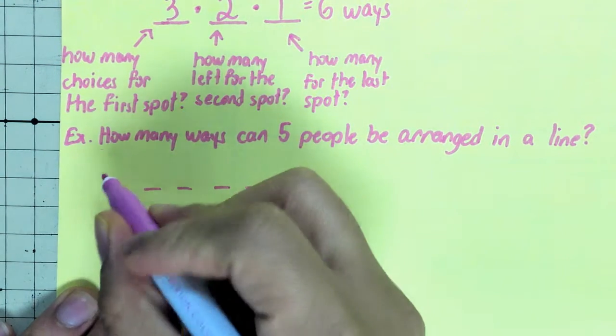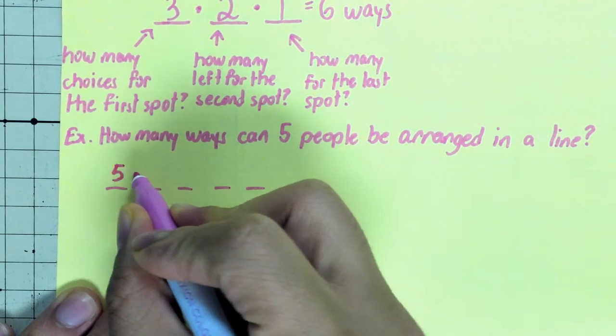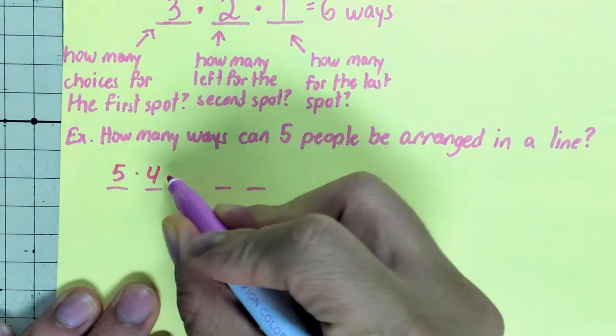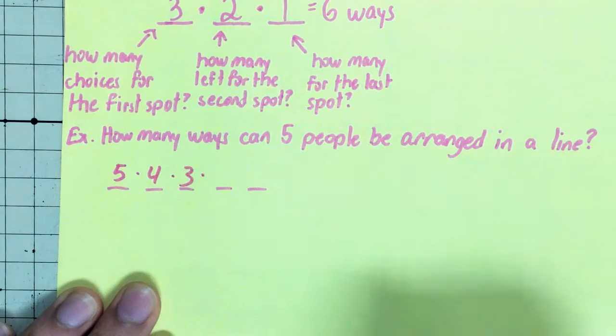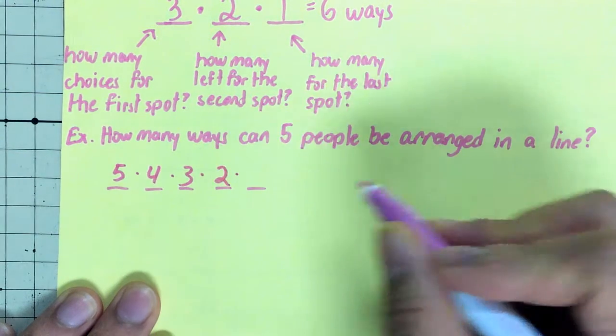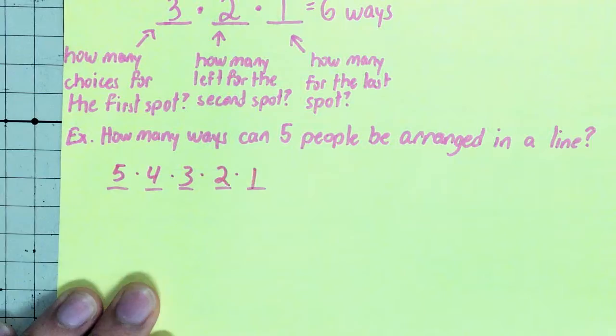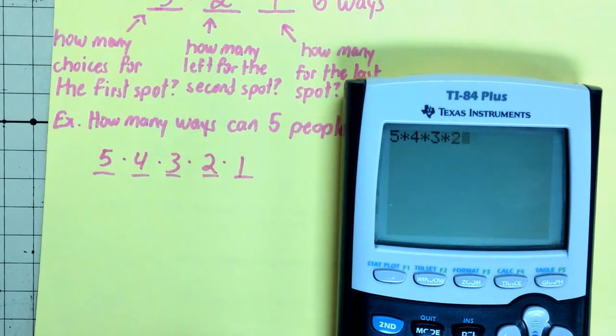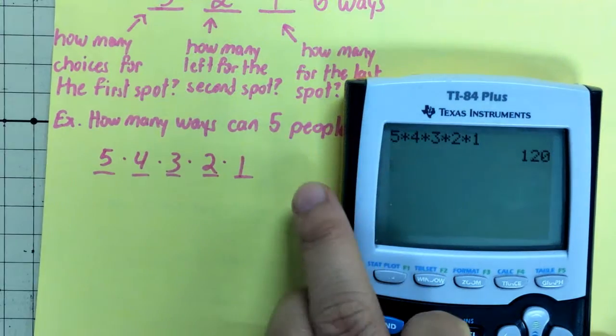So in my first spot, I have five people to choose from. My second spot, I only have four left. In my third spot, I have three. In my fourth spot, I have two left. In my last spot, there's only one person left to choose from. So we can do five times four times three times two times one to get 120 different ways.